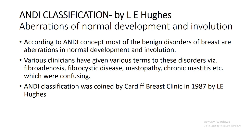There is another classification called the ANDI classification. Its background is based on the concept that most benign disorders of the breast are aberrations in normal development and involution. According to this concept, most benign conditions are not true diseases. Various clinicians have used confusing terms such as fibroadenosis, fibrocystic disease, mastopathy, and chronic mastitis — terms that do not correlate with clinical or histological findings. In 1987, Elie Hughes from the Cardiff Breast Clinic, University of Wales, UK, coined this ANDI classification.